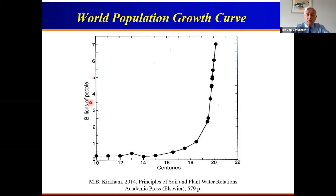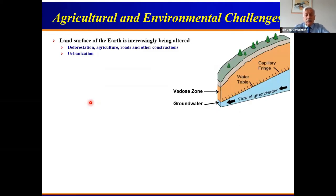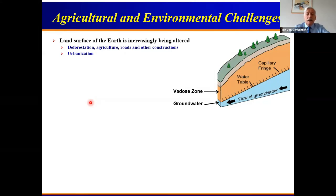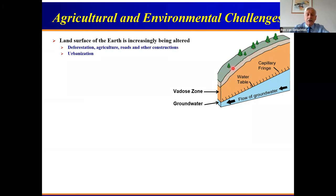I mentioned that I worked for many years at what is called the US Salinity Laboratory. The focus was really on agricultural challenges, and then very much connected with that, also environmental issues. We have been changing the surface of the earth very much. The focus here would be on the vadose zone — some people call it also the critical zone — and the groundwater resources, and of course the vegetation near the surface.